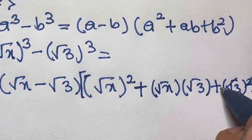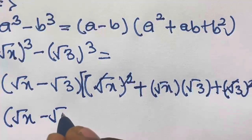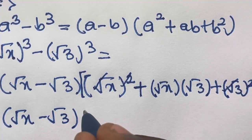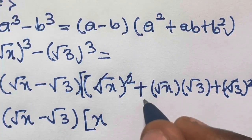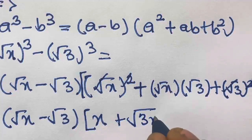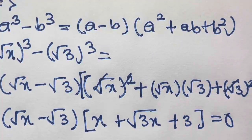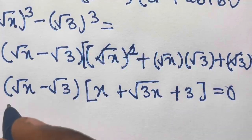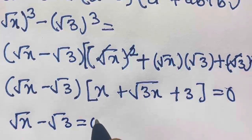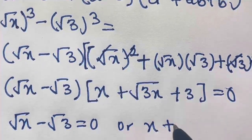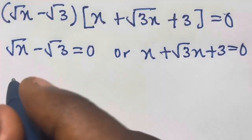Here we simplify: square root of x squared is x, and square root of 3 squared is 3. So we have (square root of x minus square root of 3) times (x plus square root of 3x plus 3) equals 0. This means either square root of x minus square root of 3 equals 0, or x plus square root of 3x plus 3 equals 0.